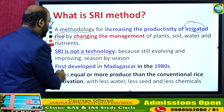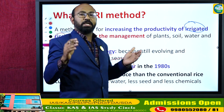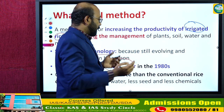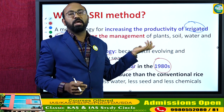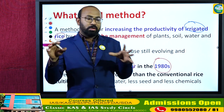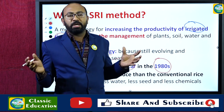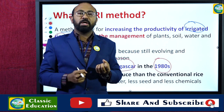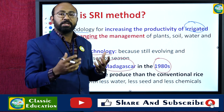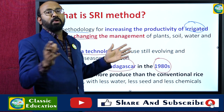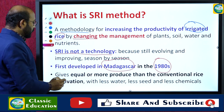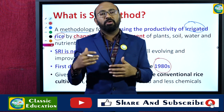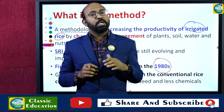SRI was first developed in Madagascar, the island located in the east of the African continent in the Indian Ocean. The concept evolved in the 1980s, making it already a 40-year-old method. It was predominantly confined to Madagascar, but nowadays a large number of countries are adopting it because it involves water saving, saving of seed rate, and gives a lot of yield — equal to or more than conventional rice cultivation.